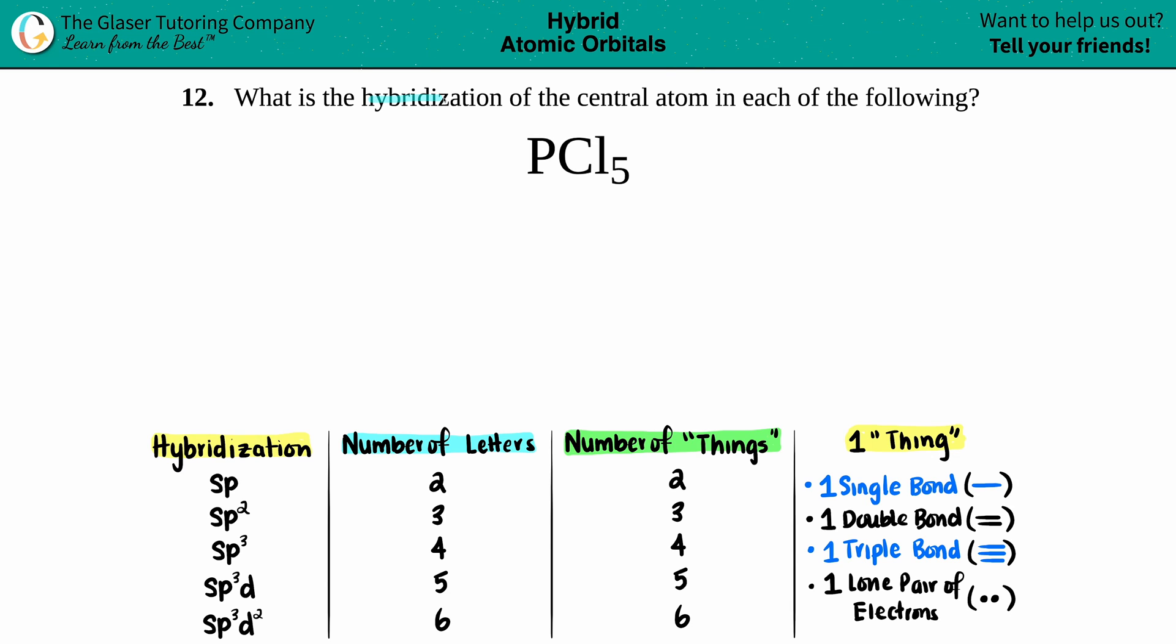Number 12: What is the hybridization of the central atom in each of the following? We have PCl5, so phosphorus pentachloride. Whenever they're asking for hybridization, the easiest thing to do is to always draw the Lewis structure first.